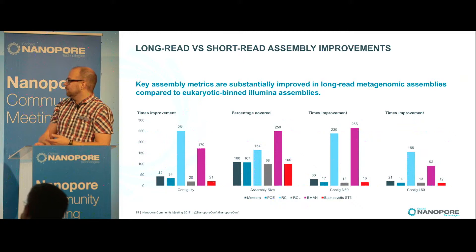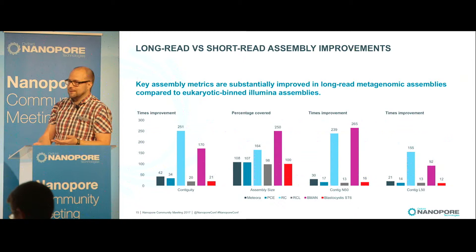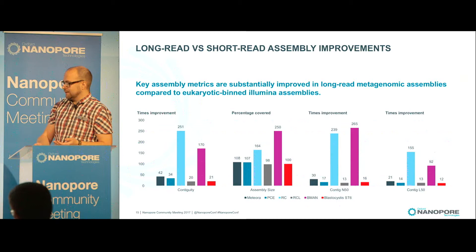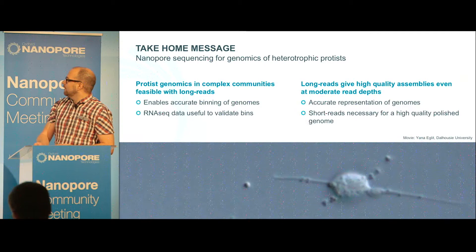We have done a number of genomes beyond the ones presented today, and we consistently see that all key assembly metrics are improved by introducing long reads. In some cases, large parts of genomes not represented at all in Illumina assemblies are recovered in long-read assemblies.